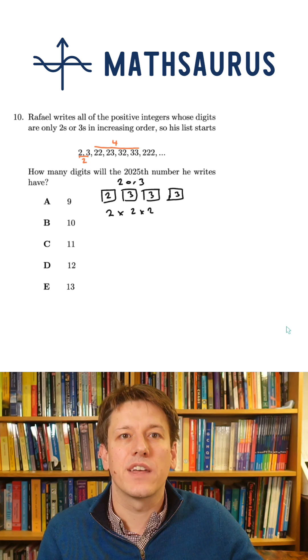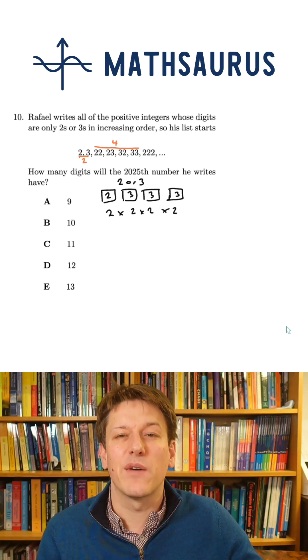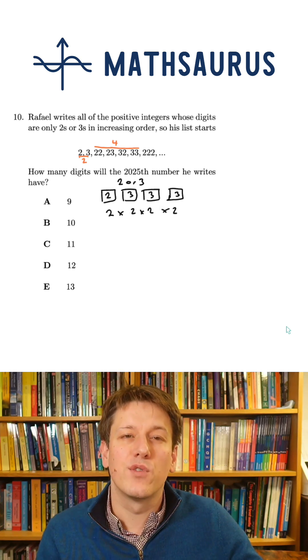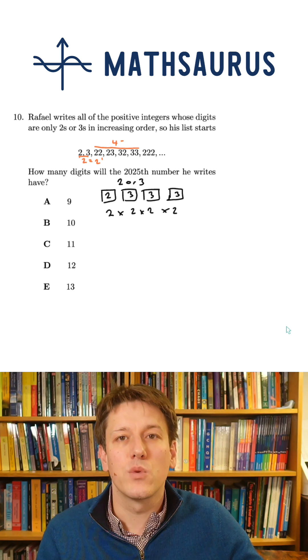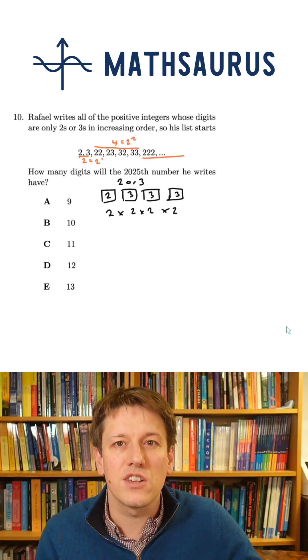If I add a fourth digit, then I've got another two choices there, so that would be 16 choices for four-digit numbers. So we've got 2 to the 1 one-digit numbers, 2 squared two-digit numbers,